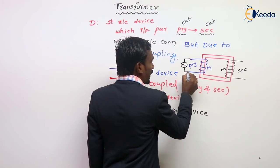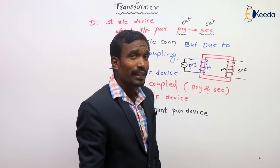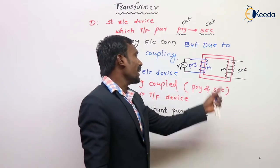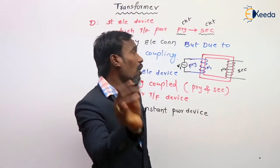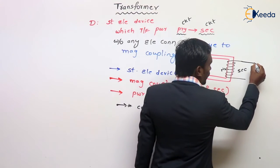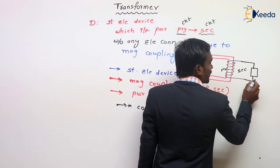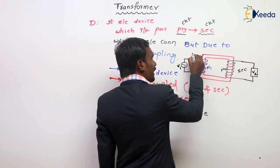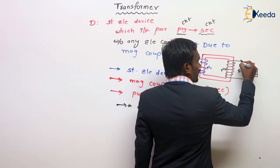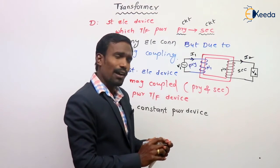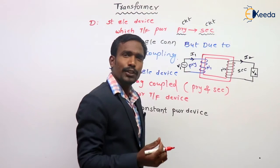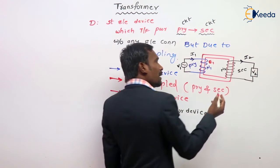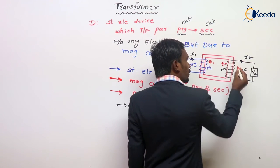The winding which is excited by the supply voltage is called primary winding. The winding which is connected to the load is called secondary winding. The current through the primary winding is taken as I1, and the current through the secondary winding is taken as I2. The EMF induced in the primary winding is E1, and the EMF induced in the secondary winding is E2.